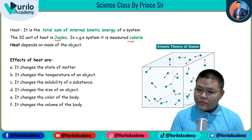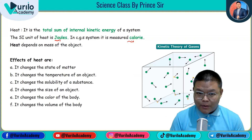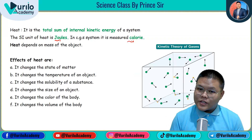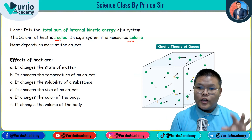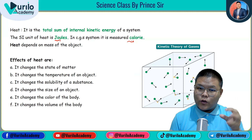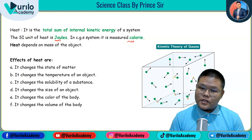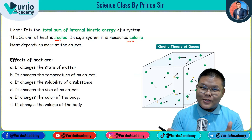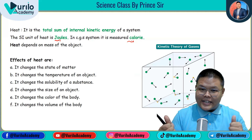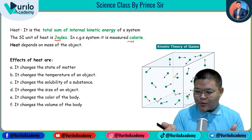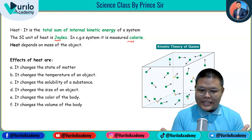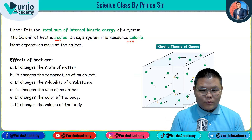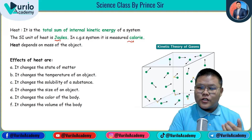Heat also affects the solubility of a substance. For example, if we put sugar in hot water it dissolves much more easily than in cold water — so heat increases solubility. Heat also changes the size and volume of an object: an iron ball expands and its volume increases when heated. Heat can also change the color of certain materials.